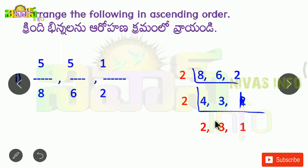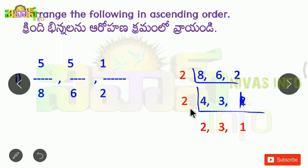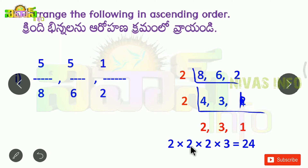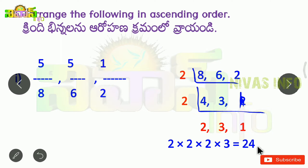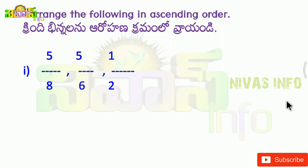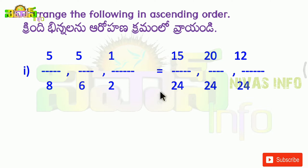Now we multiply. 2 into 2, 2 into 2, 2 into 3. So we divide: 2, 2, 4. Then 4, 2, 8. 8 is 24. So 24 is 24. Now we have 24 as the denominator.